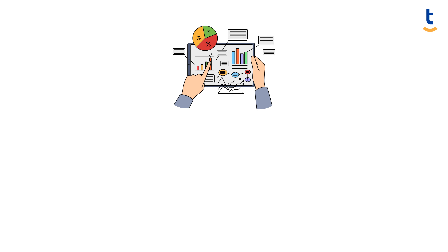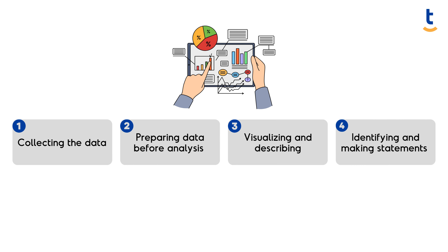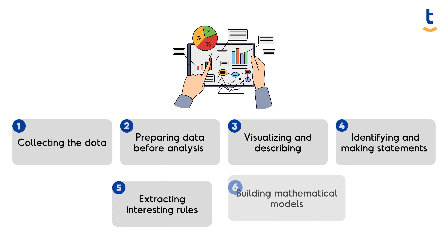The process of turning raw data into valuable insights has a few fantastic different steps: collecting the data, preparing data before analysis, visualizing and describing relationships between variables, identifying and making statements about groups of observations, extracting interesting rules, and building mathematical models that can be used to understand the data and make predictions.